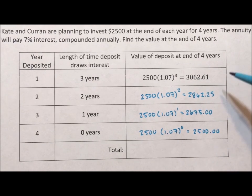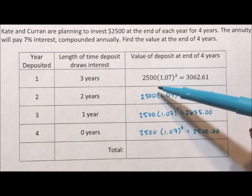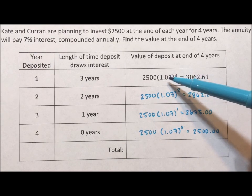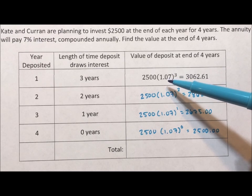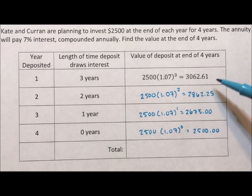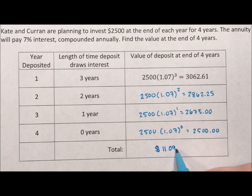So what we're doing here is because each year the money has a different amount of time to grow, we're calculating each year's deposit separately. Then to find the total, we have to add these up. And if we add these four numbers up, we get a total of $11,099.86.